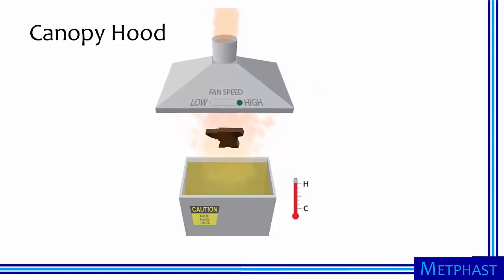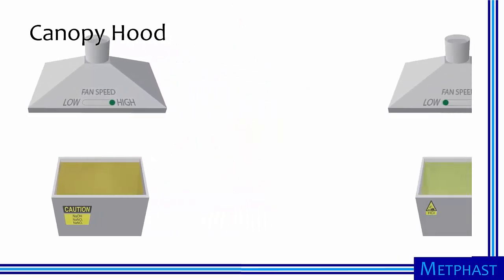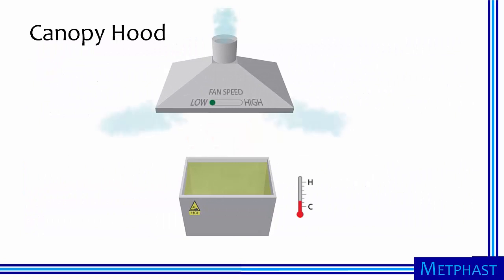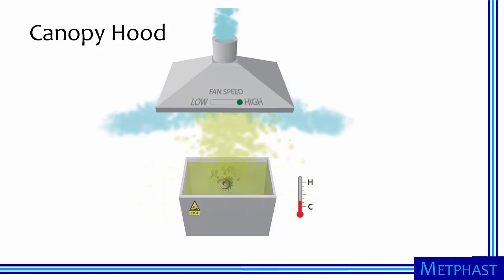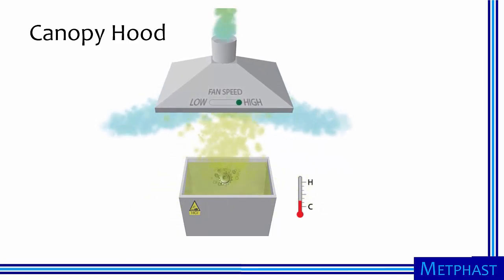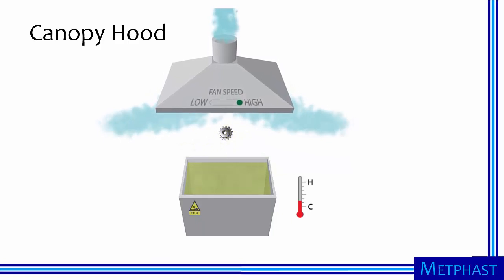Canopy hoods are not recommended for cold processes, or those that emit vapors that are more dense than air. When a steel gear is dipped in room temperature hydrochloric acid in descaling, the heavier-than-air vapors do not rise to meet the canopy hood. If possible at all, much higher fan speeds are needed to capture these vapors, perhaps ten times or more than the hot process.